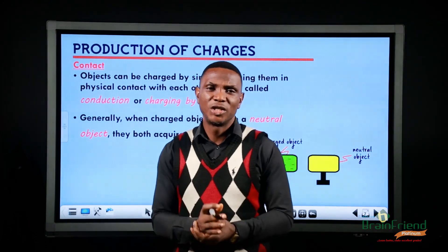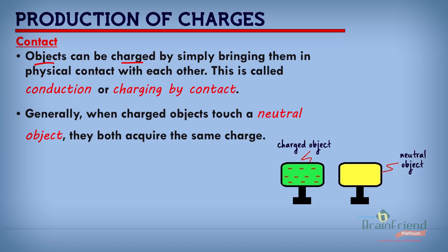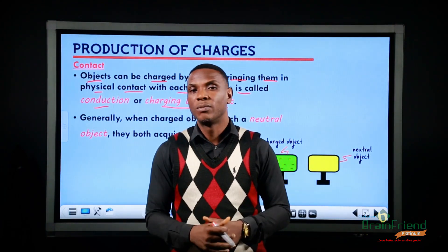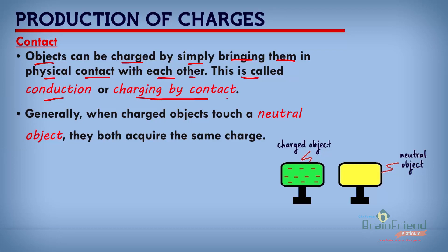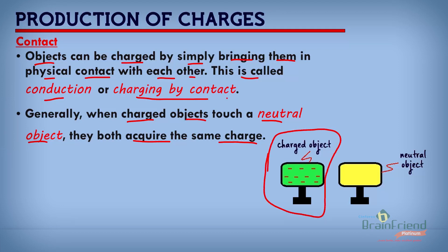The next method of producing charge is by contact. Objects can be charged by simply bringing them in physical contact with each other — this is called conduction or charging by contact. Generally, when charged objects touch a neutral object, they both acquire the same charge. Here's our charged object — if you bring it in physical contact with a neutral object, eventually they will both acquire the same charge.